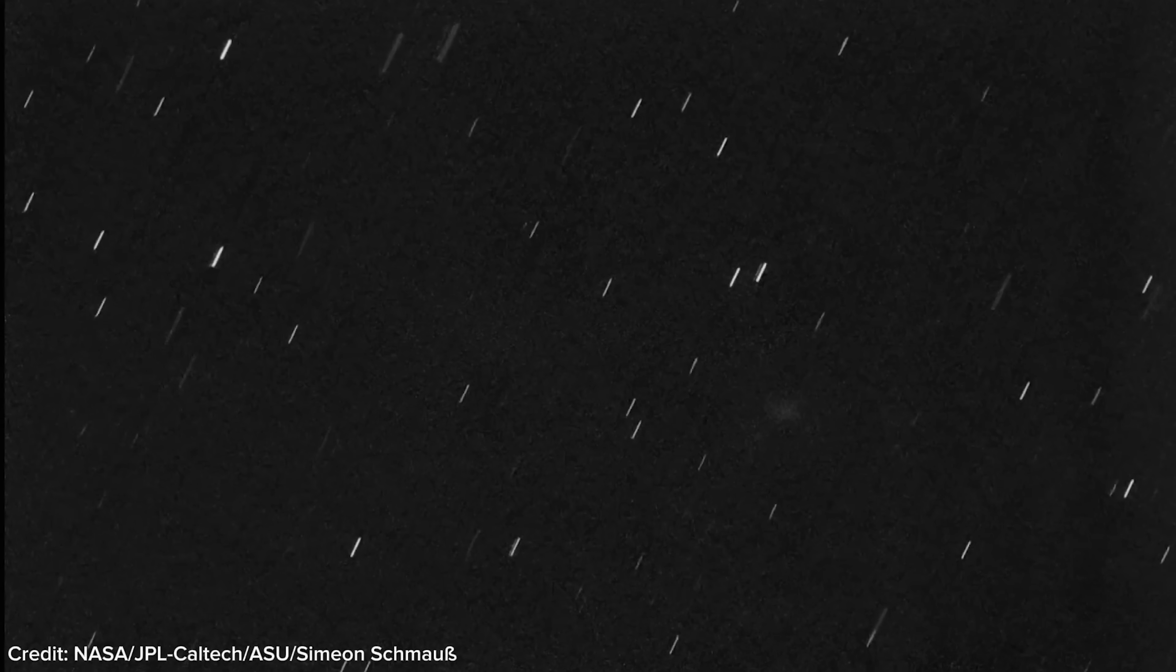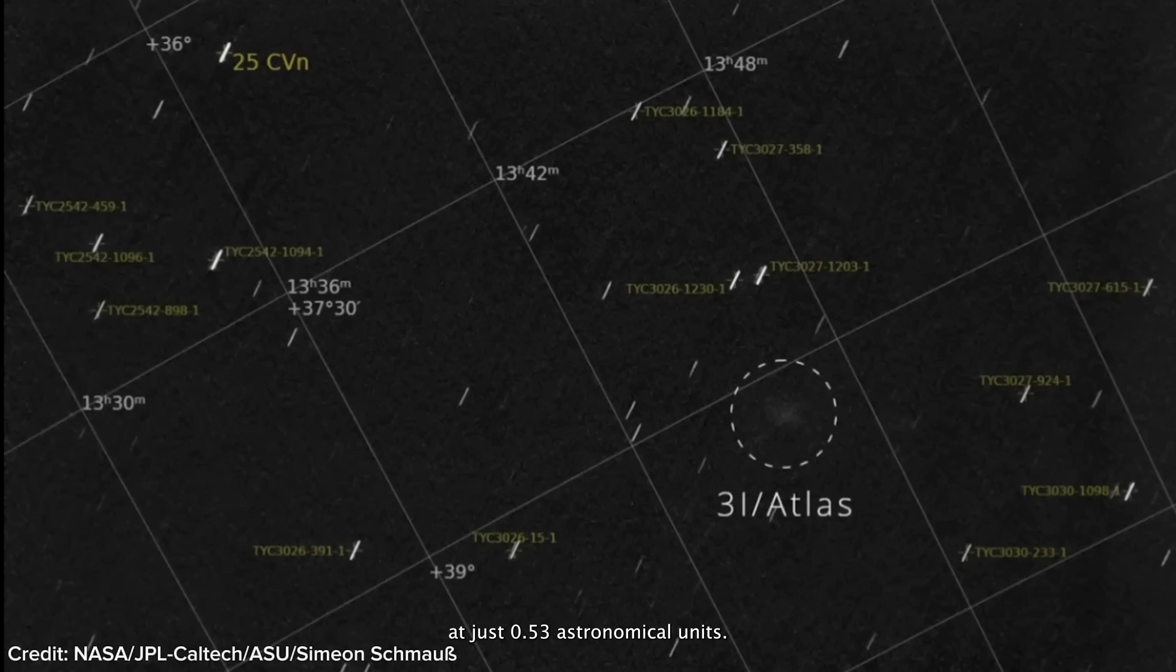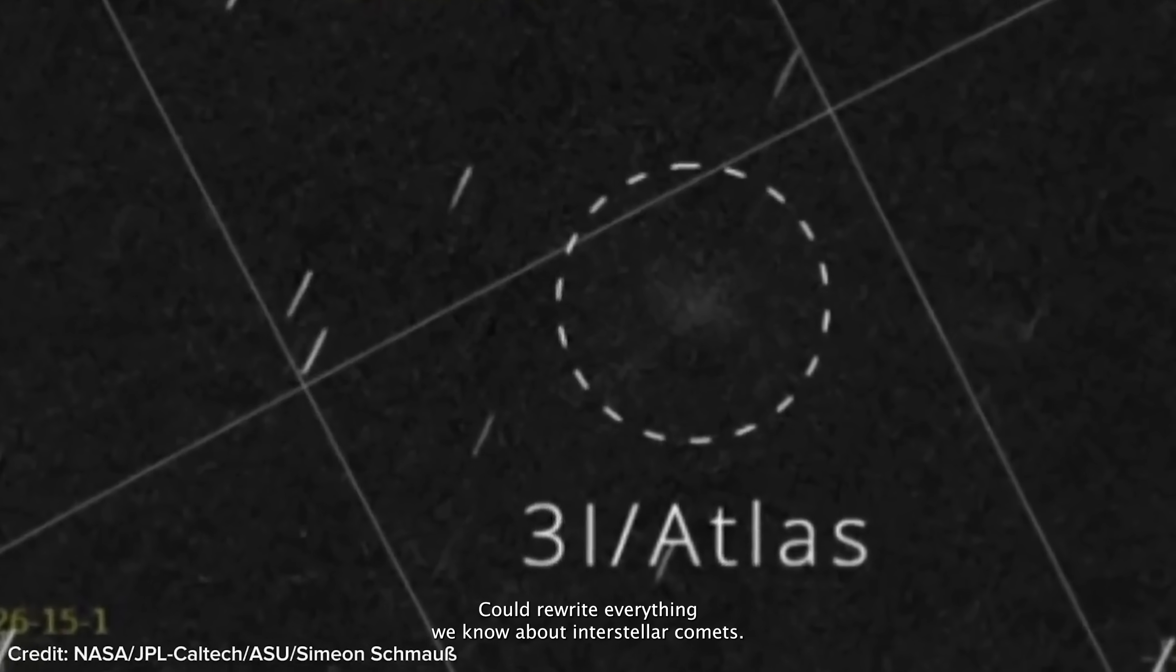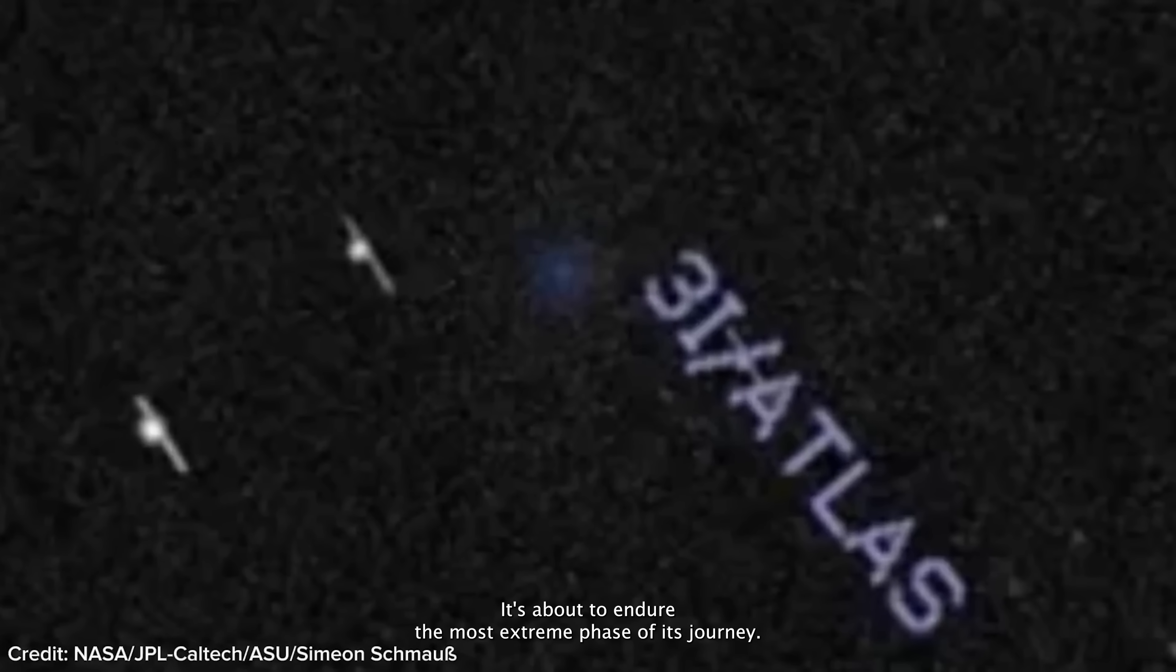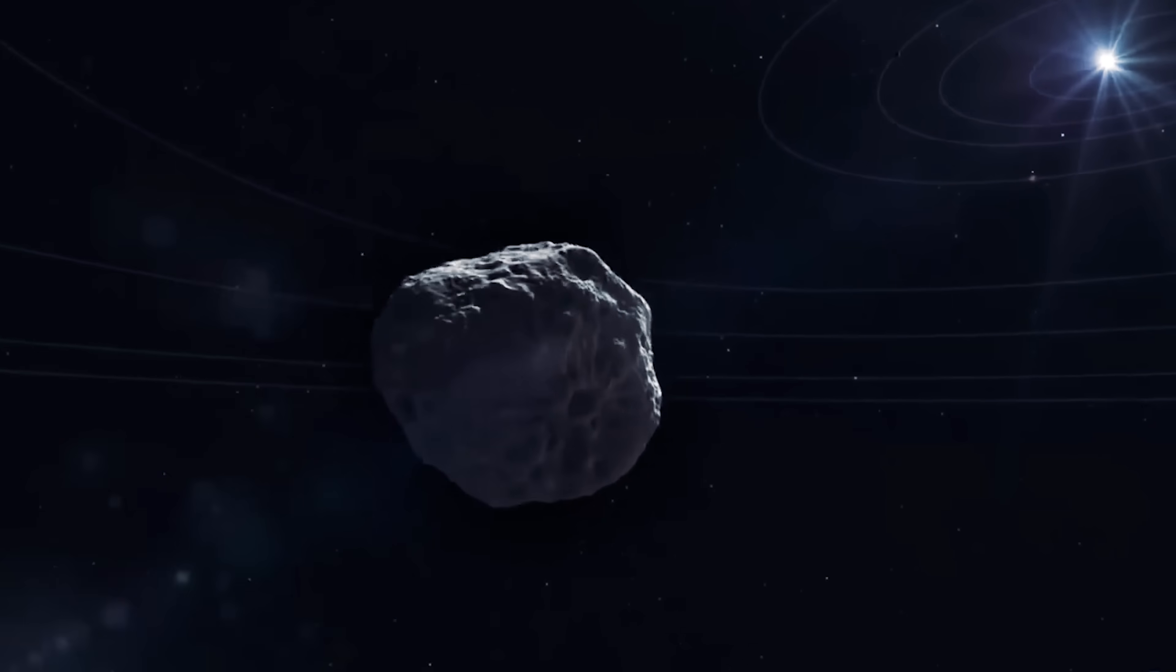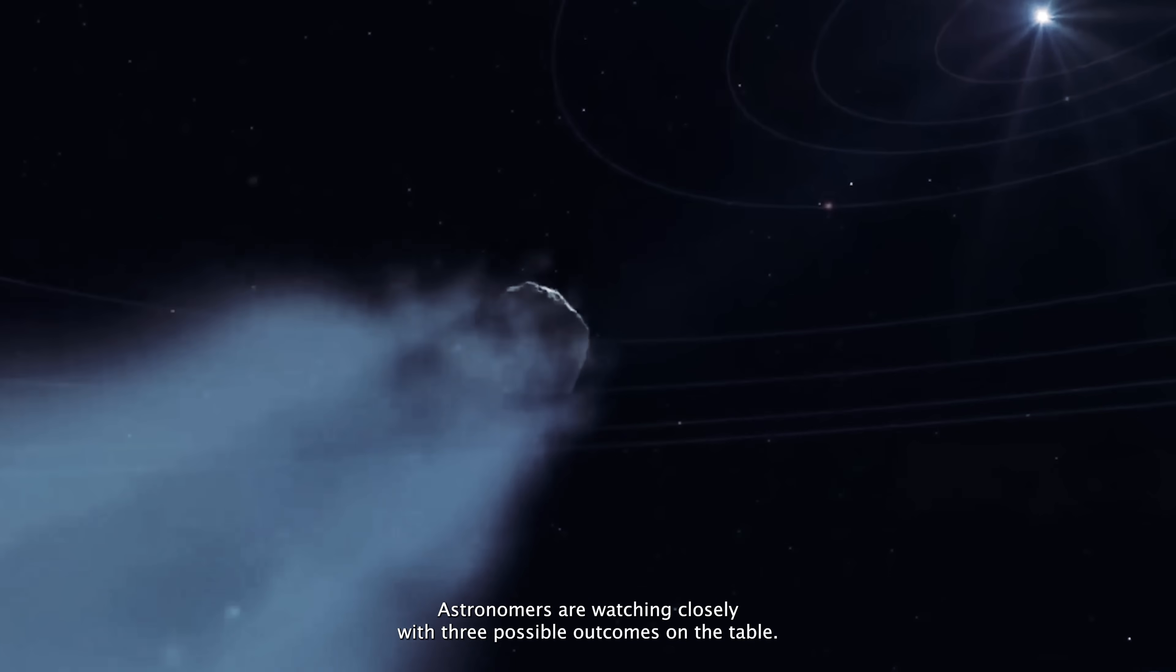The most intense part of 3i Atlas's journey is nearly here. On October 29th, it will swing past the Sun at just 0.53 astronomical units. And what happens then could rewrite everything we know about interstellar comets. As 3i Atlas races toward its closest approach to the Sun, it's about to endure the most extreme phase of its journey. At perihelion, it will be bombarded with maximum solar heat, a test that could decide its fate. Astronomers are watching closely, with three possible outcomes on the table.